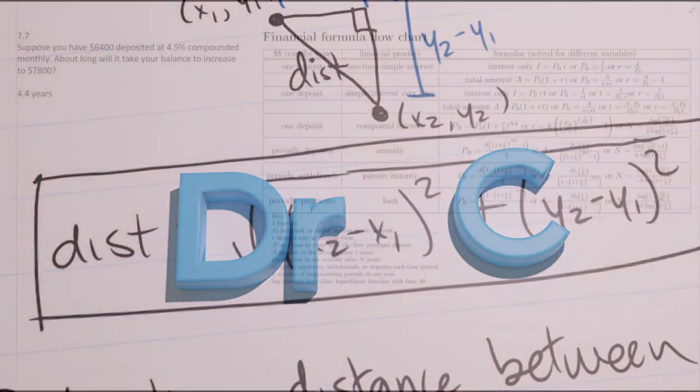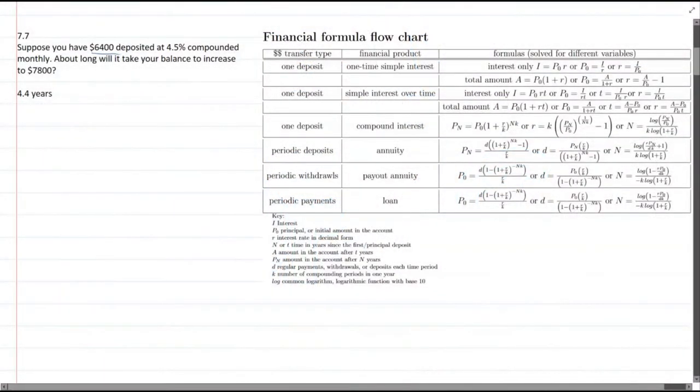This problem, we have an initial deposit right here. There is no monthly deposit. The interest is compounded monthly, but there's no monthly deposit. And they want to know how long will it take for the balance, or the amount, to increase to $7,800.